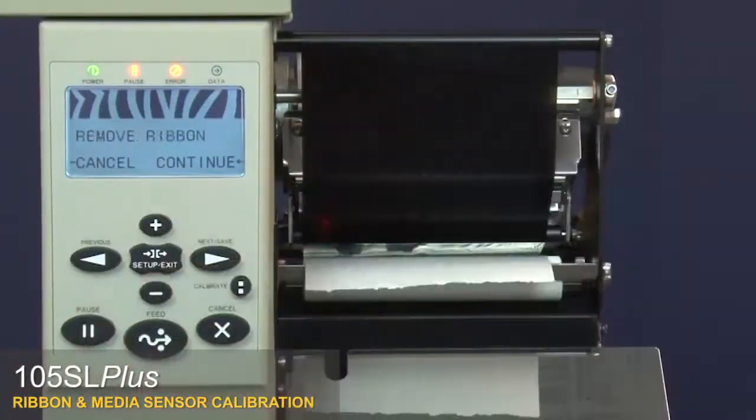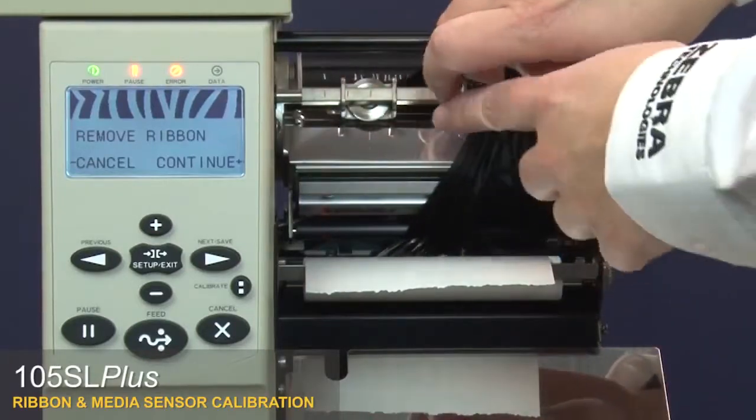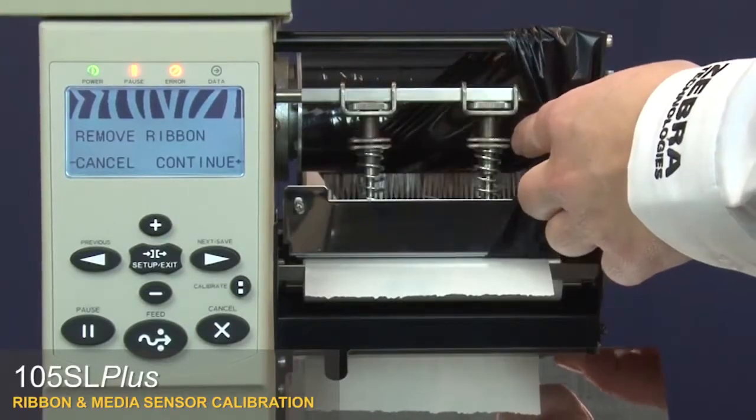Press plus to continue. The control panel will show remove ribbon. Move the ribbon to the side. Close the printhead.